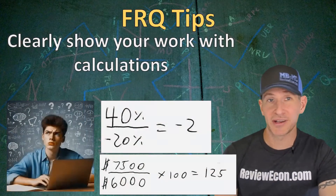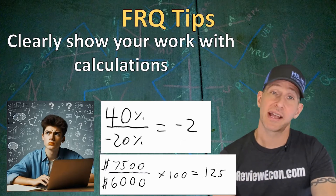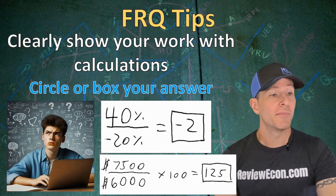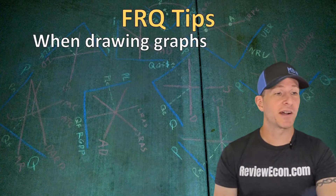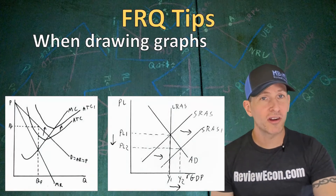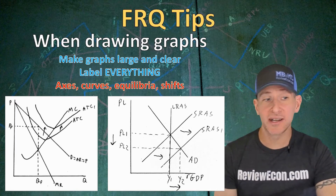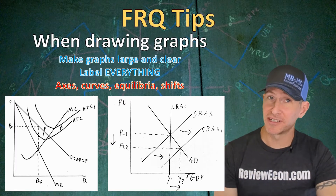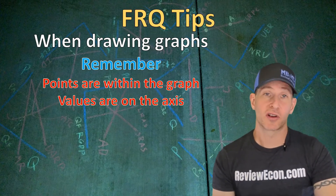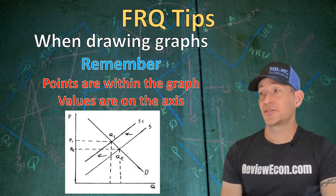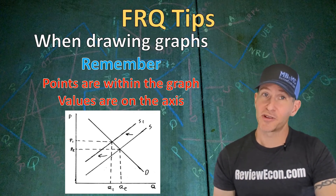When doing math on the AP exams, clearly show your work using the numbers from the question, and show the different steps you took to arrive at your answer. Once you have your answer, circle or box it to make it clear to the readers what you intended. When drawing graphs on free response questions, make sure your graphs are large and clear with everything labeled — label your axes, your curves, the equilibria, and any shifts. Read the question carefully to use the labels indicated. Remember, points are within the graph, but price and quantity values go on the axes — label equilibrium quantities on the x-axis, not within the graph.